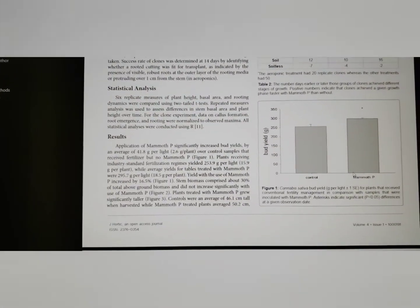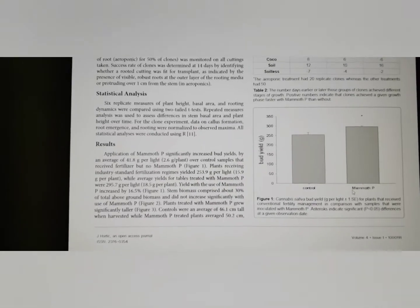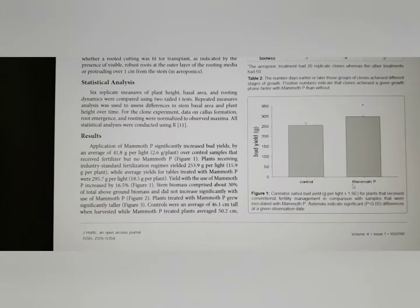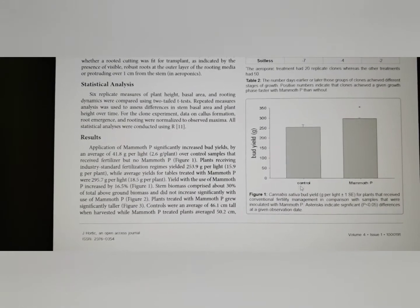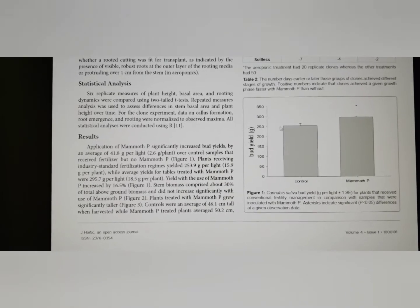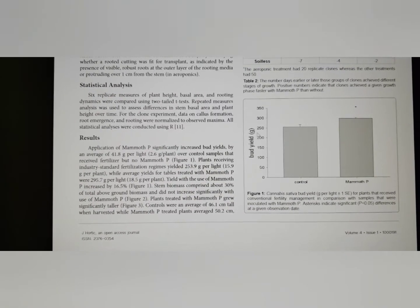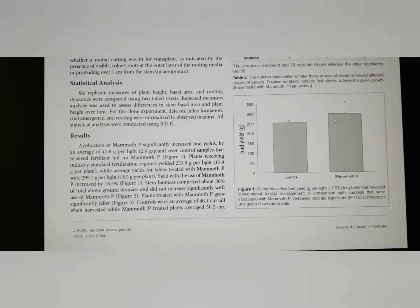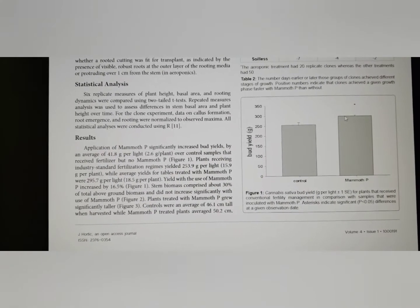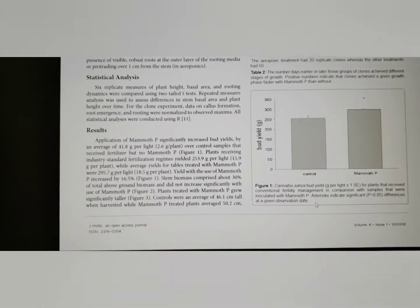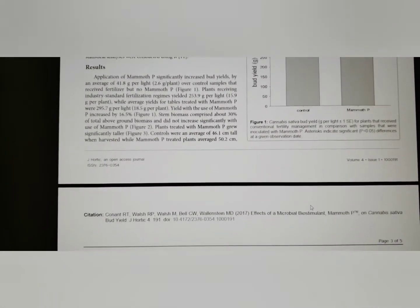And if you scroll down here, you can see they have some nice visual charts for bud yield, what they found. And you can see the control here, the plants that did not receive mammoth P. And the bud yield ultimately came in about 17% higher for the plants that were treated with mammoth P soil microbes.